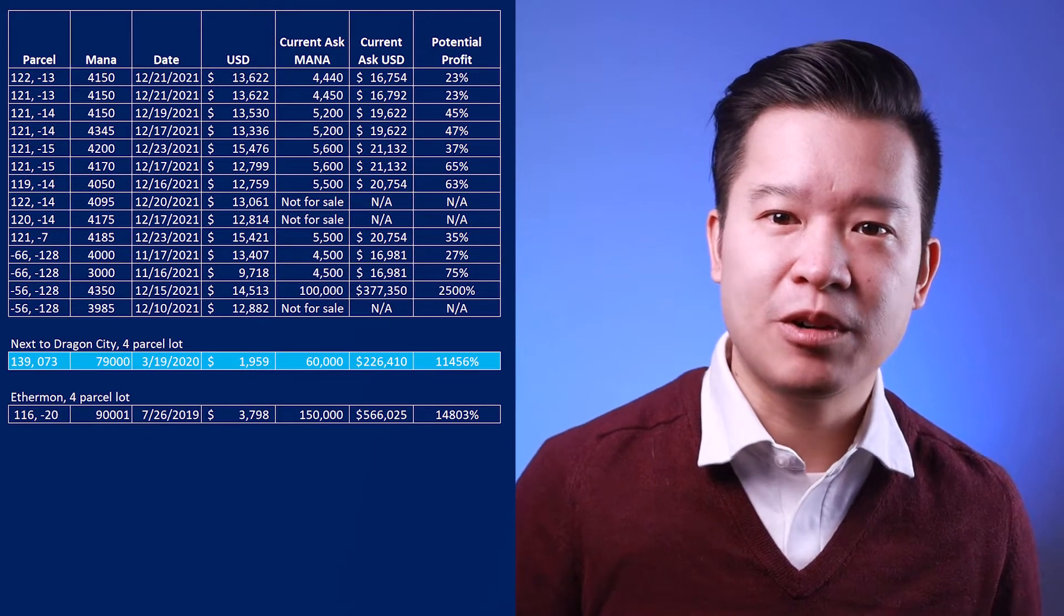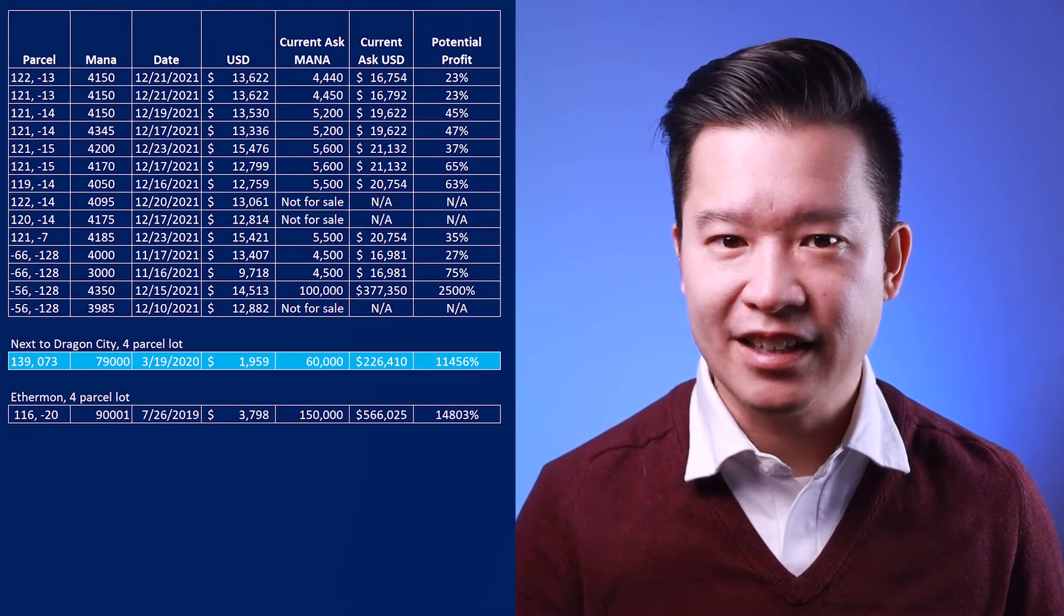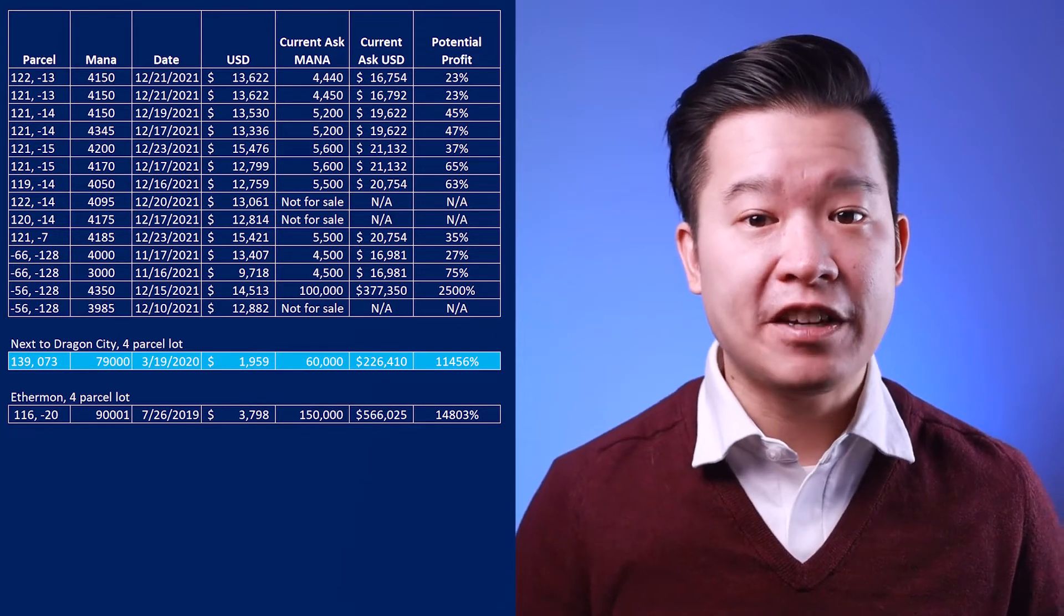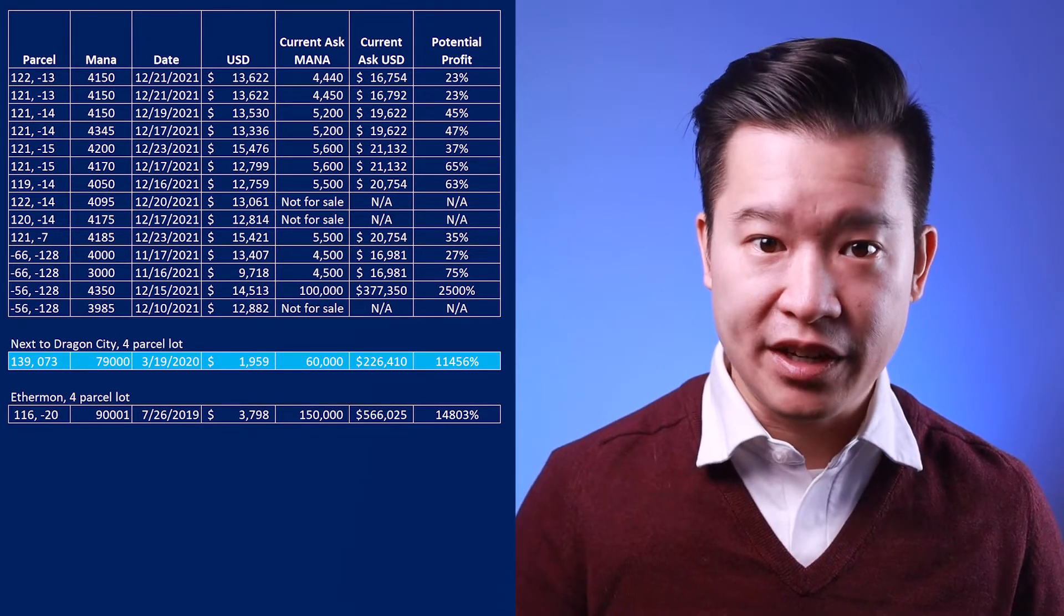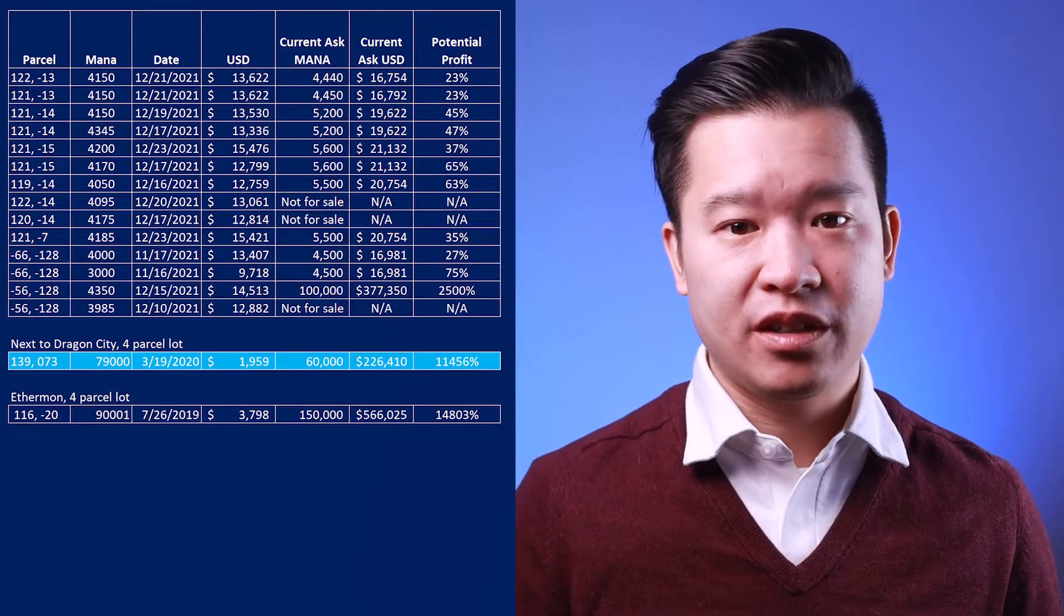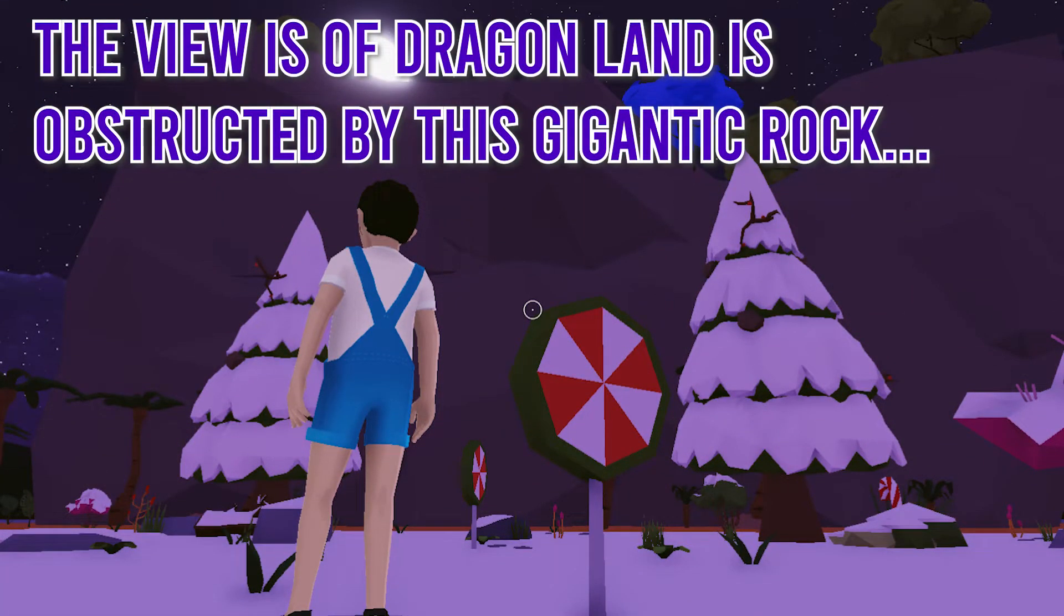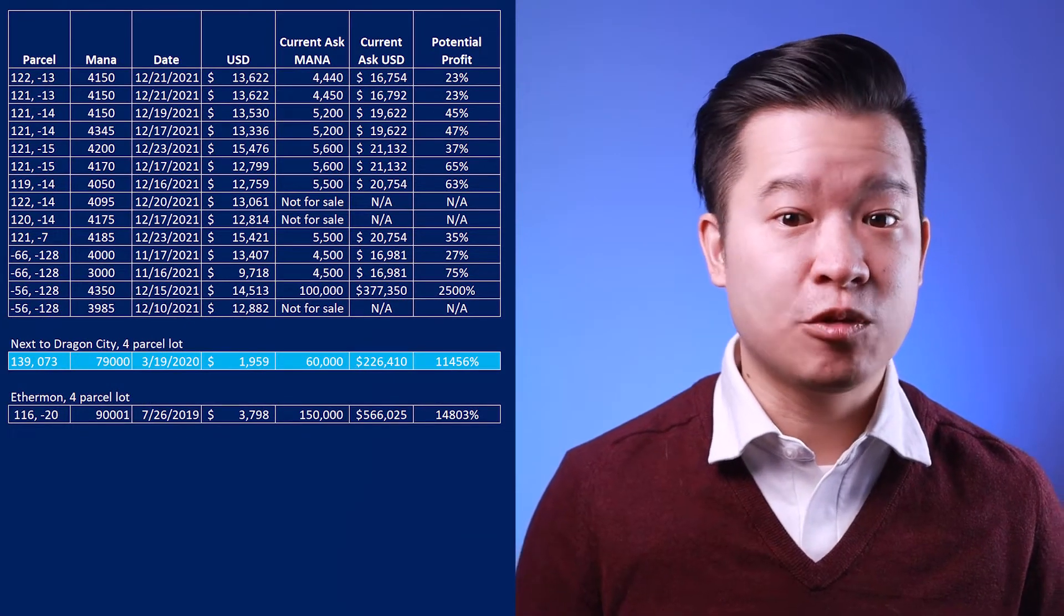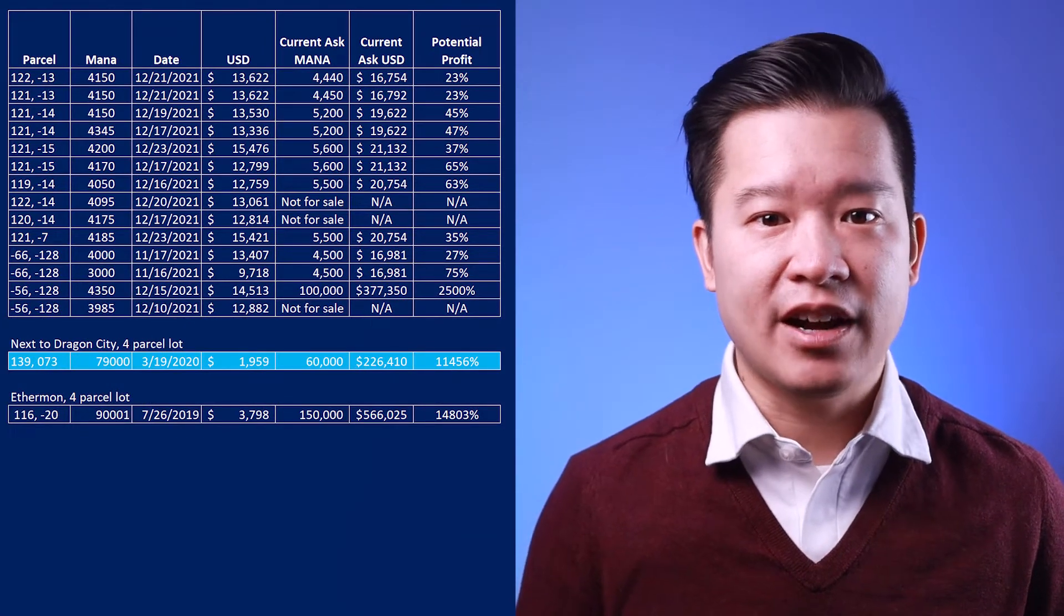Now if we explore some bigger lots like this one made of four parcels next to Dragonland, we see a pie-in-the-sky asking price of 60,000 mana, or 15,000 mana per parcel. And the selling point is that it's got great views of the district. Whatever. With my shit graphics processor, I'm not impressed by the views anywhere here. But it last traded at the beginning of the pandemic on March 19th, 2020 for more mana than they're asking now.